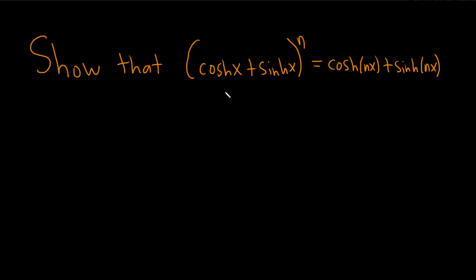In this problem, we have to show that cosh plus sinh to the nth power is equal to the cosh of nx plus the sinh of nx. Let's go ahead and go through it. Before we do, recall the definitions of cosh and sinh.